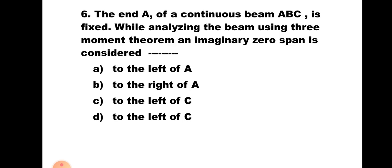Question number 6. The end A of a continuous beam ABC is fixed. While analyzing the beam using the three-moment theorem, an imaginary zero span is considered: A. to the left of A, B. to the right of A, C. to the left of C, D. to the left of C. When any end is fixed, you have to consider an imaginary zero span beyond that particular end — to the left if the fixed end is on the left, to the right if fixed on the right. Here end A is on the left and it is fixed, so the imaginary zero span is to the left of A. Hence the correct answer is A, to the left of A.